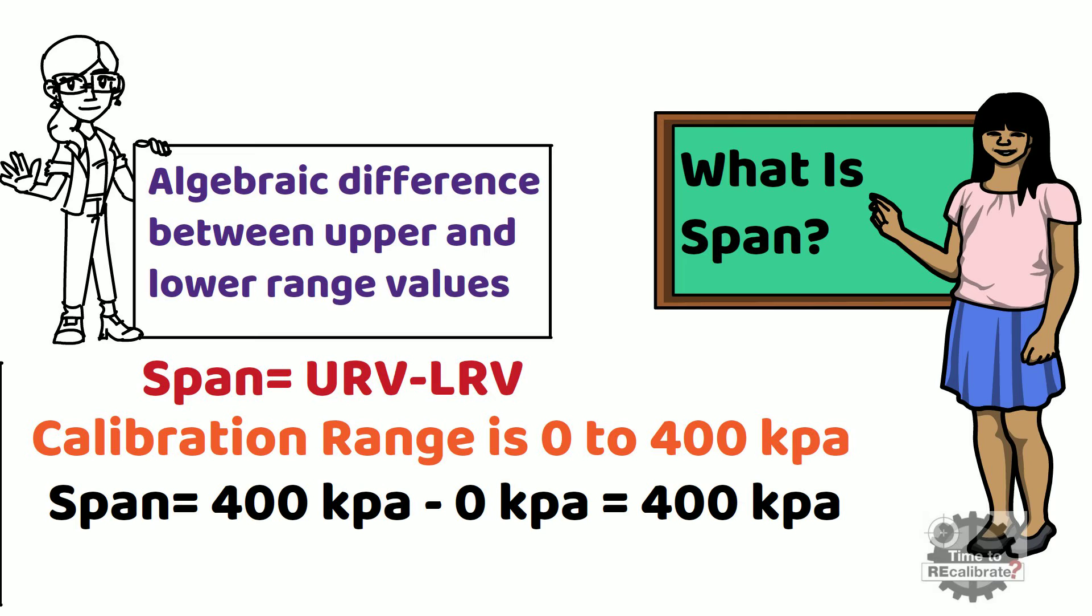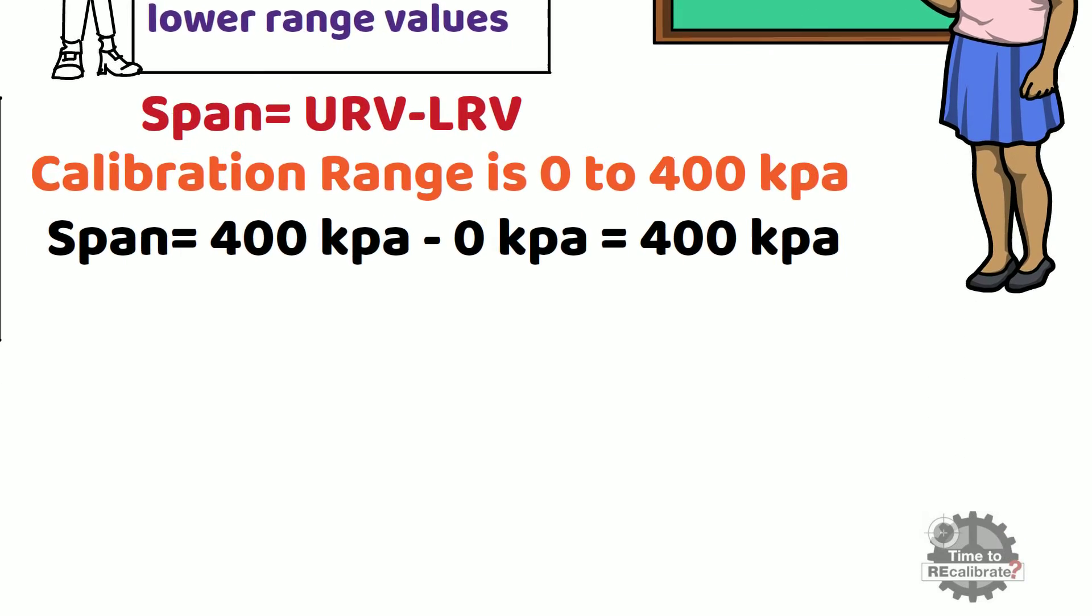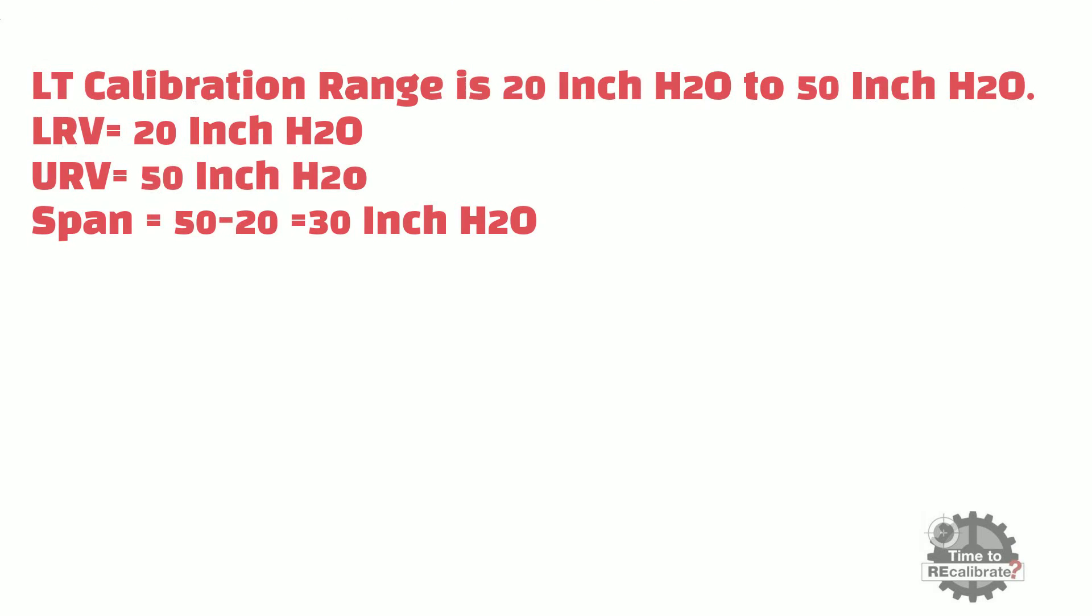Let's take another example to understand concept of span. In this example, 20 to 50 inch H2O is the calibration range of level transmitter. In this example, span value will be 50 minus 20. So span value will be 30 inch H2O.